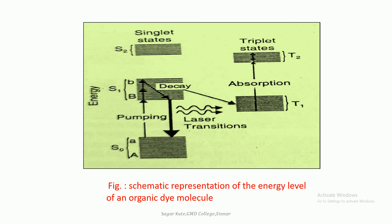From there, the molecule undergoes a non-radiative transition to the lower vibronic level of S1 state, which acts as the upper laser level. The role of the lower laser level is played by an upper vibronic level of S0. The levels at S0 are so closely spaced that they form a continuum. The laser transition can occur to various levels within a range defined by the vibrational levels of the ground state.